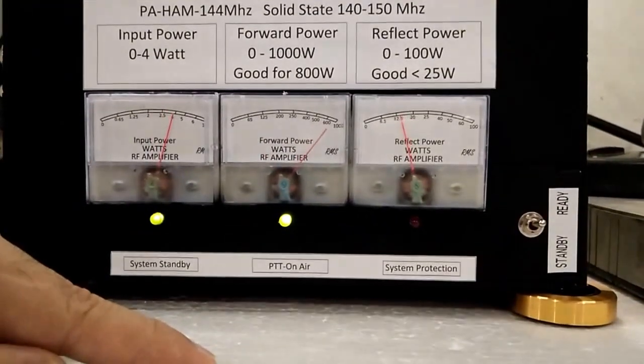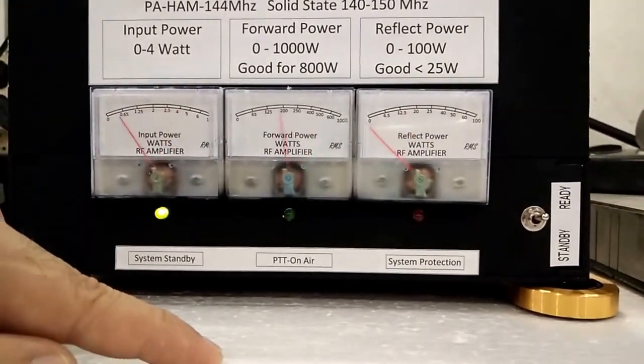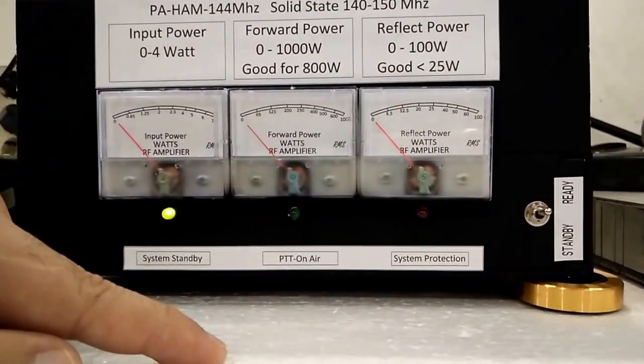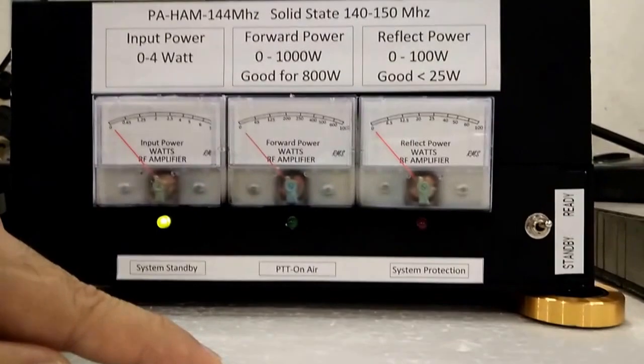As you can hear, the coaxial relay is relaying the antenna to the amplifier, so it can receive and transmit.